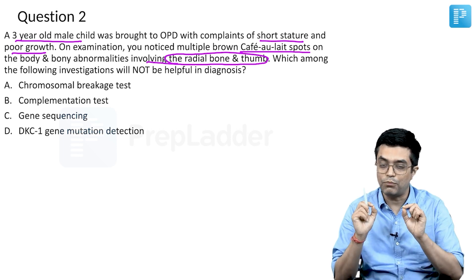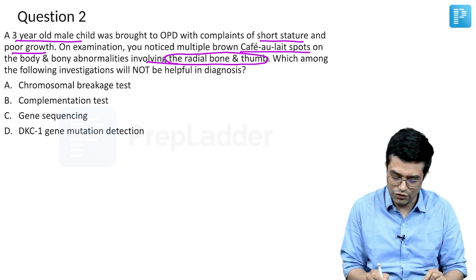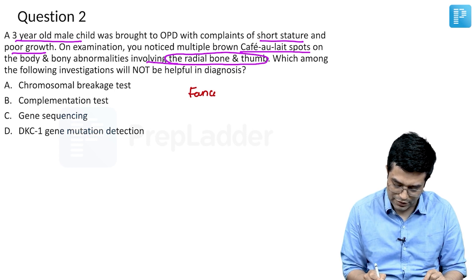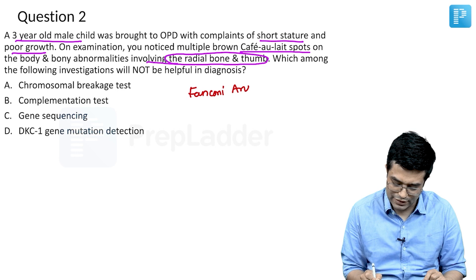Number three, there are skeletal abnormalities involving upper limb, the radial aspect. All of this is fitting into a possible clinical diagnosis of Fanconi Anemia.